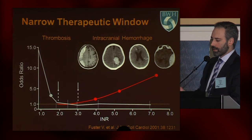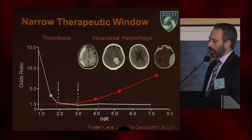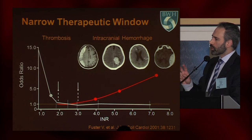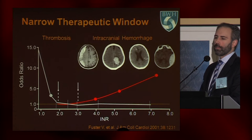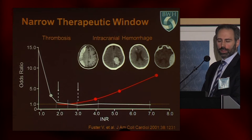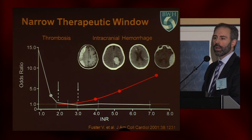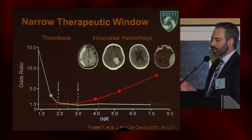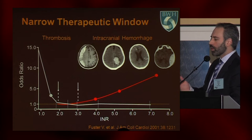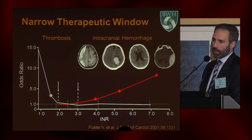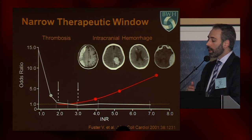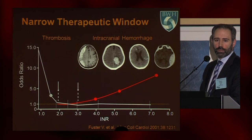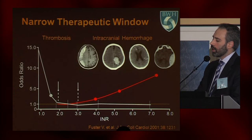Here we can see that dartboard phenomenon for managing patients on warfarin. We try, for most indications, to keep patients between two to three, and if we can keep them there, it's an efficacious therapy. The issue is if we drop below two, we place patients at risk for thrombosis. And when we exceed three, we place them at risk for major bleeding, in particular intracranial hemorrhage.